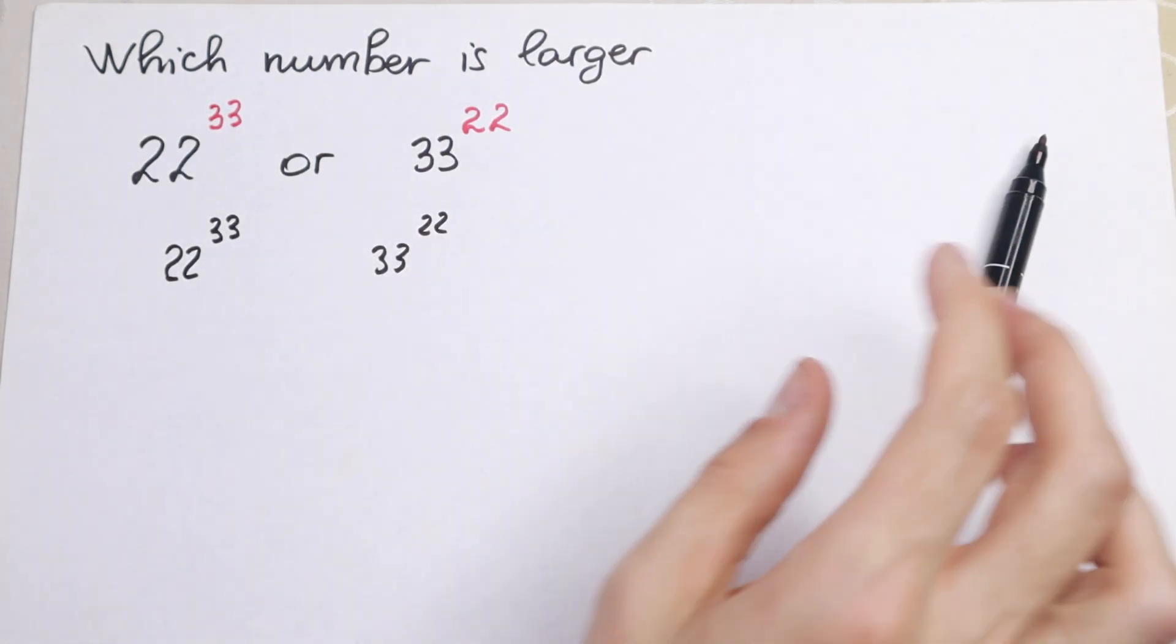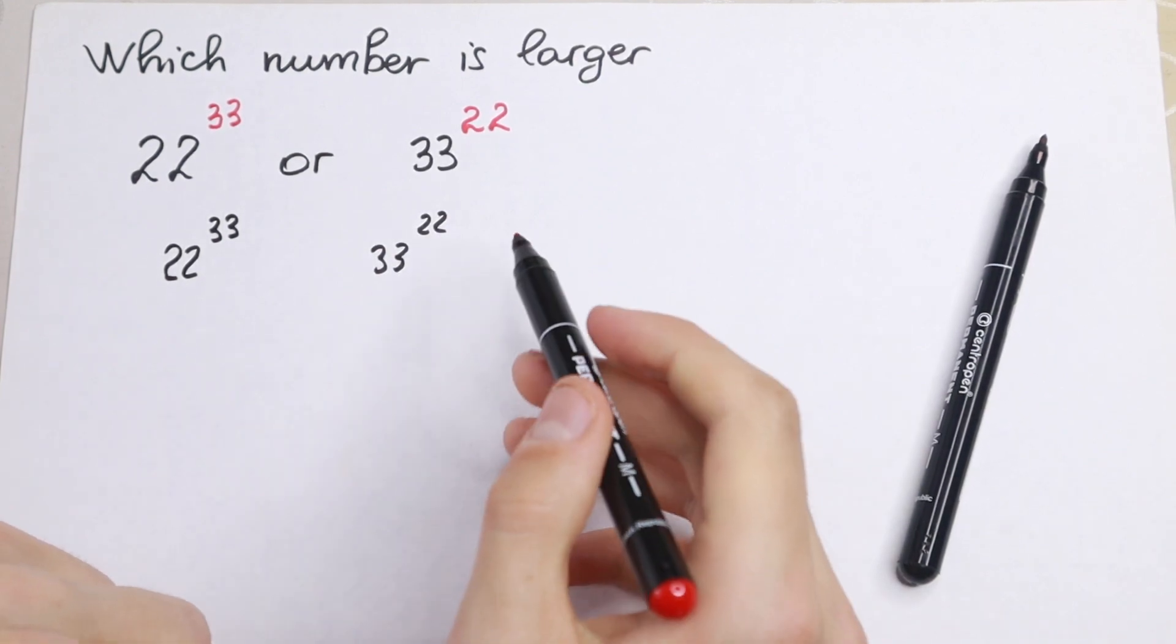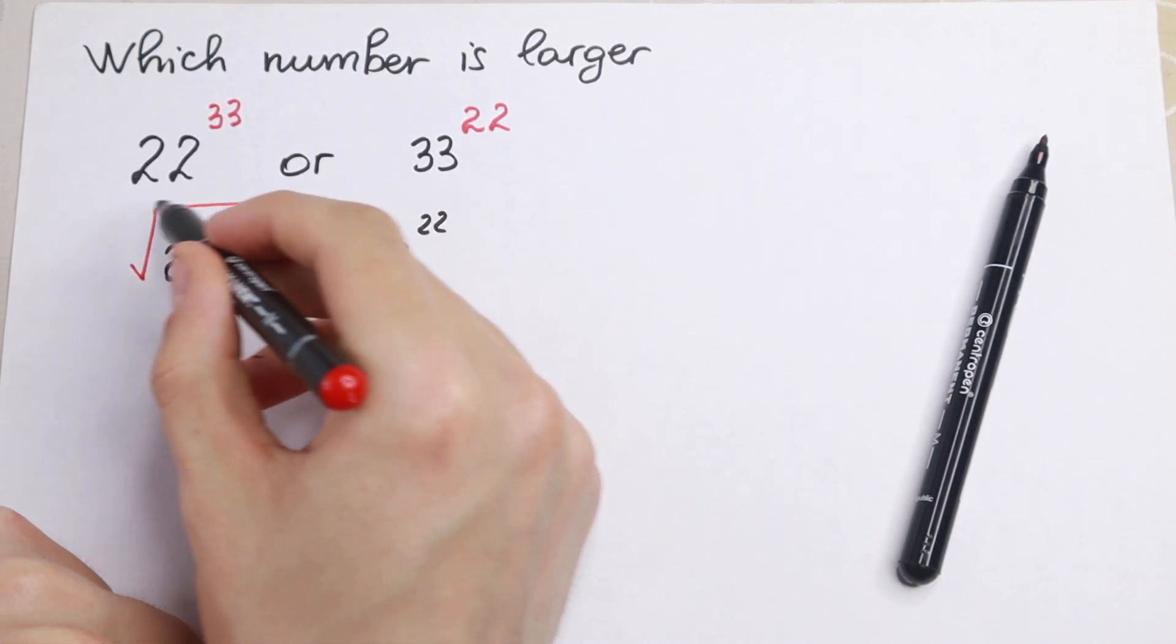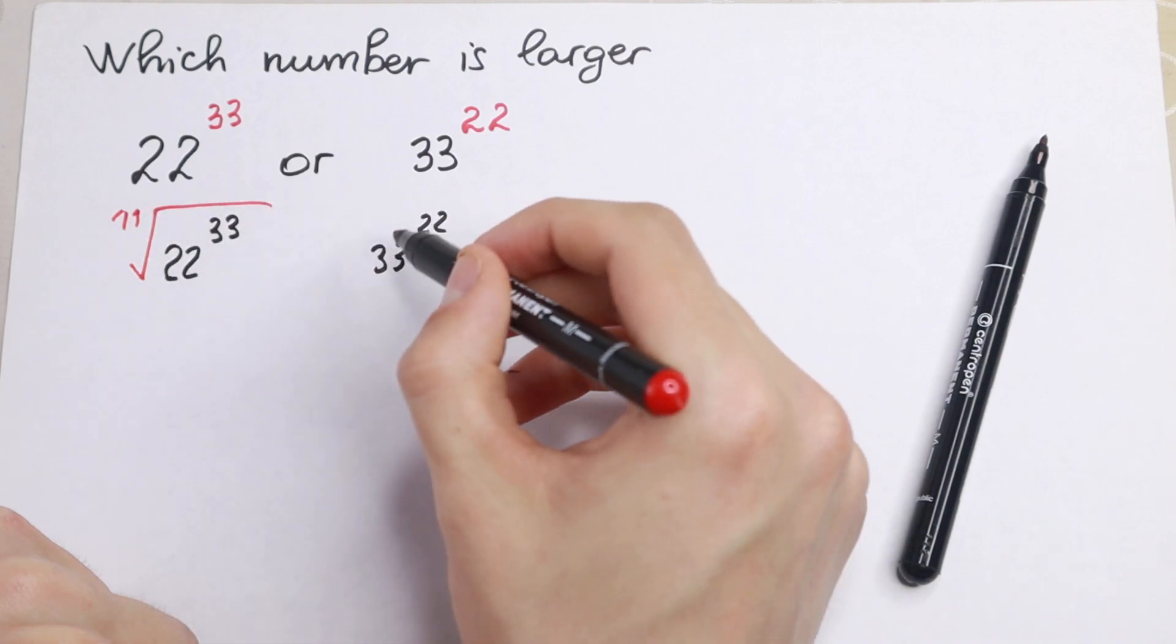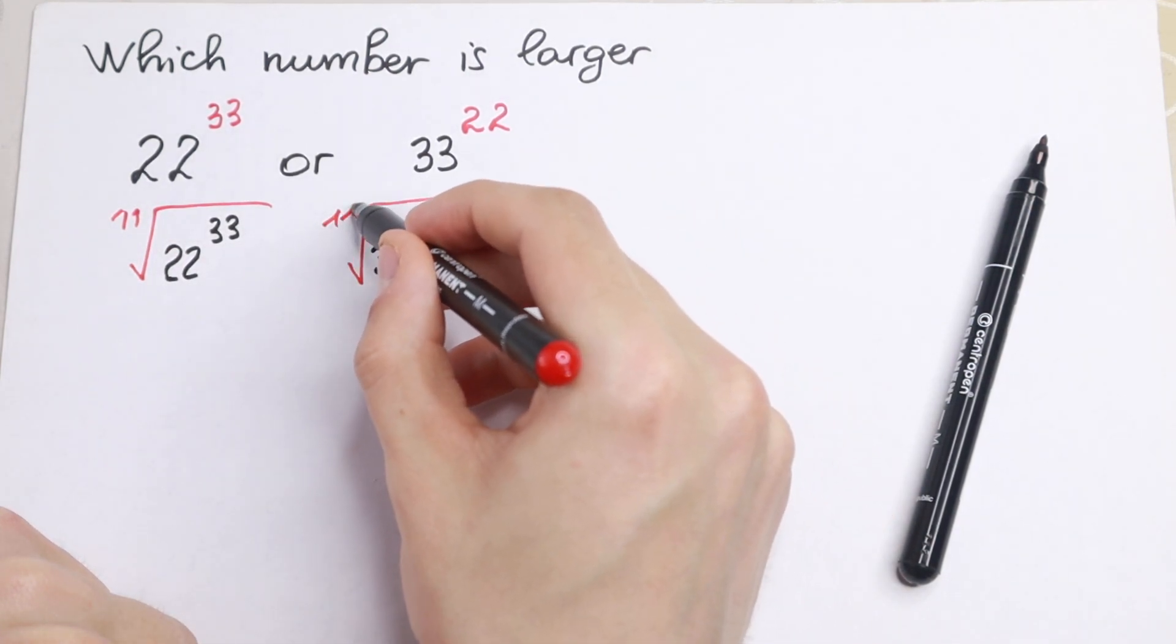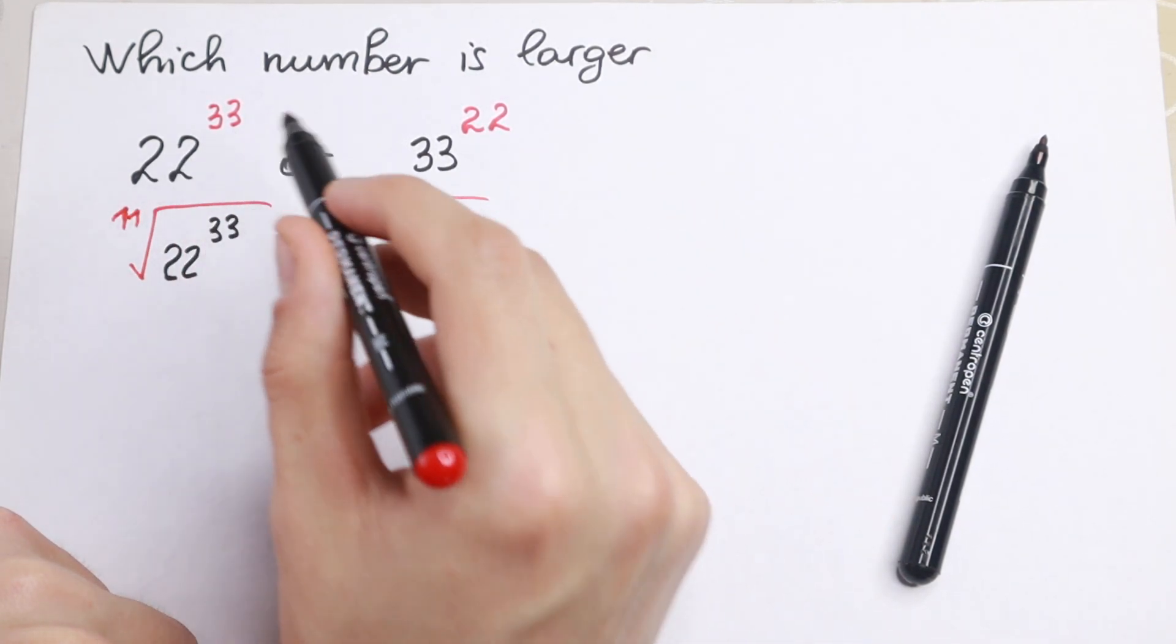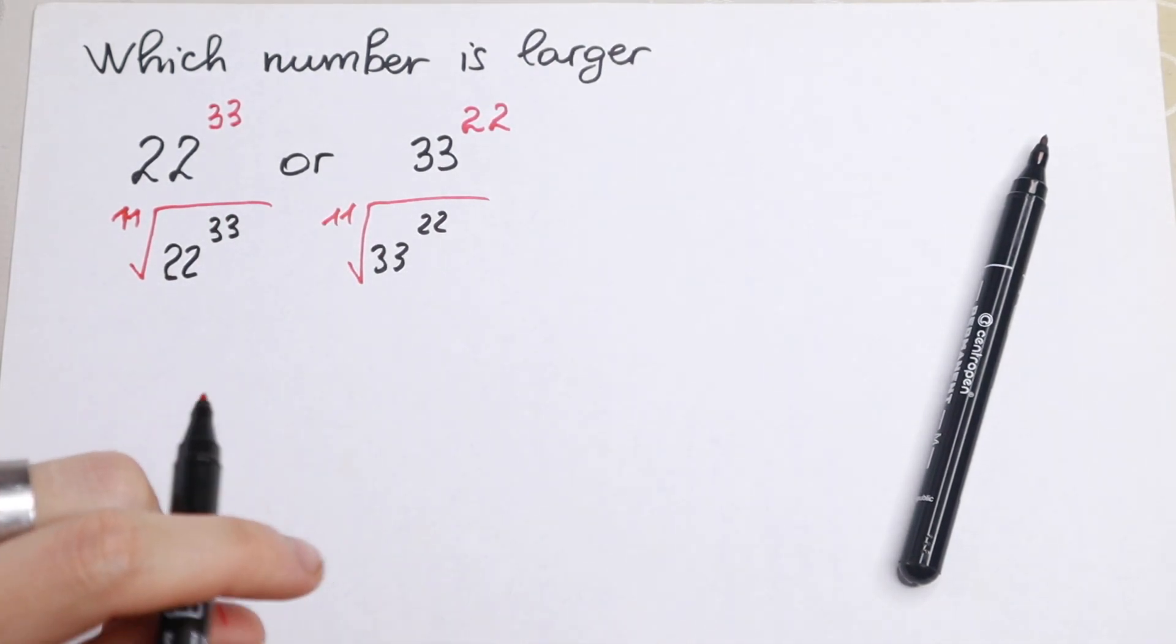As you can see, 33 and 22 are really good powers because we can take the 11th root from both sides. If we take this 11th root from both sides because 11 can be divided by 33.